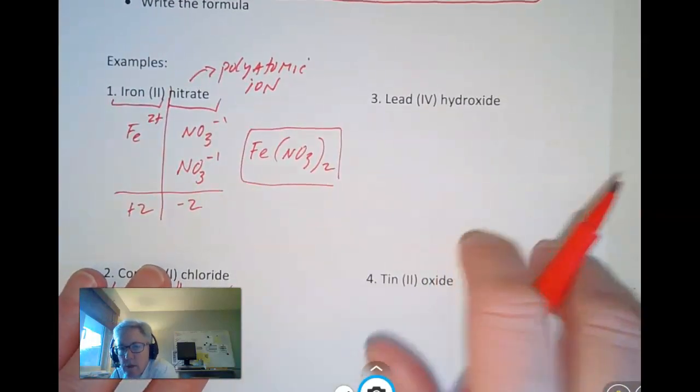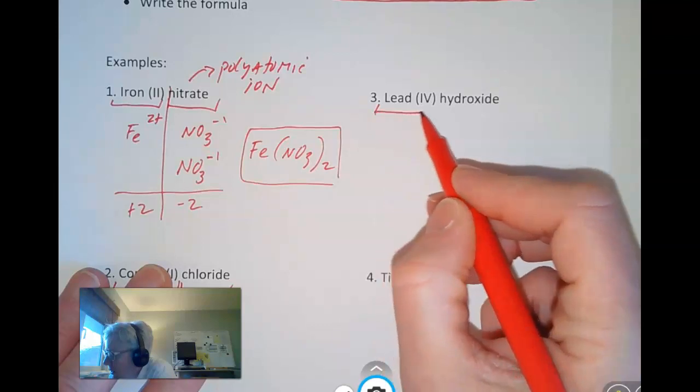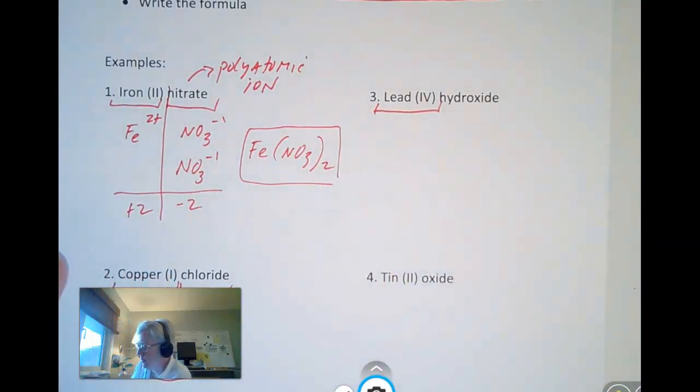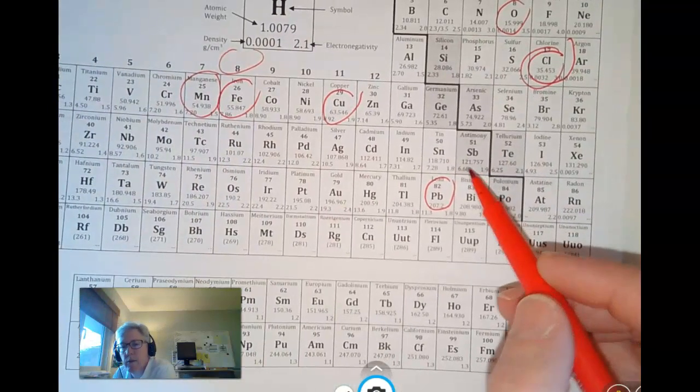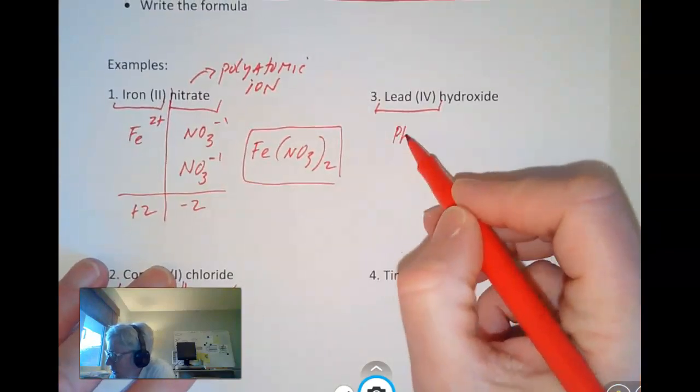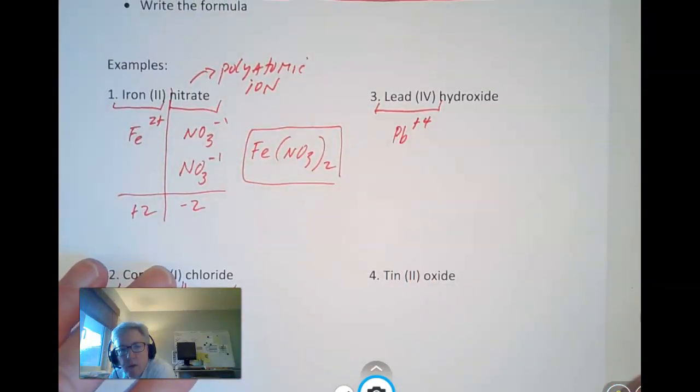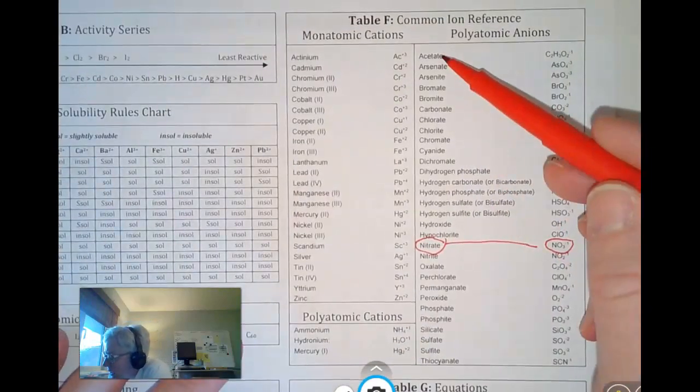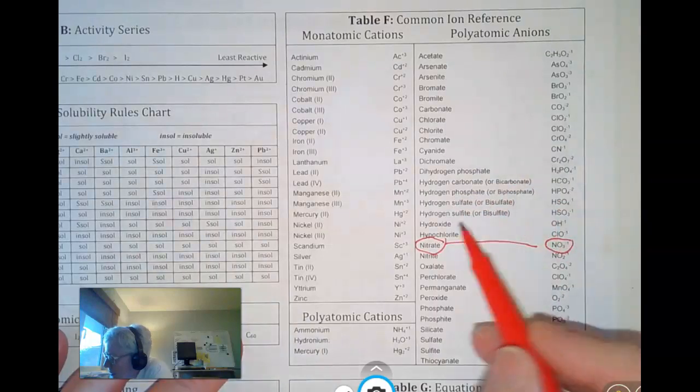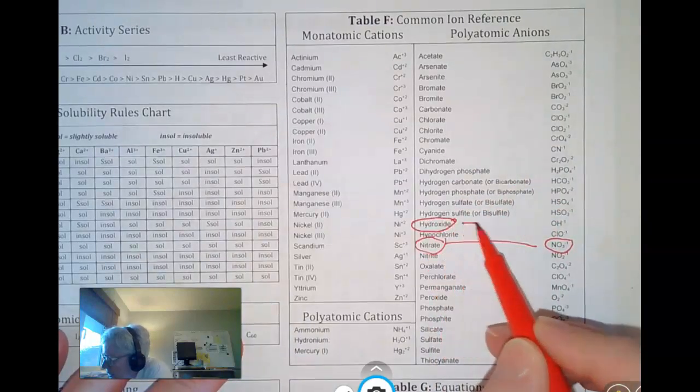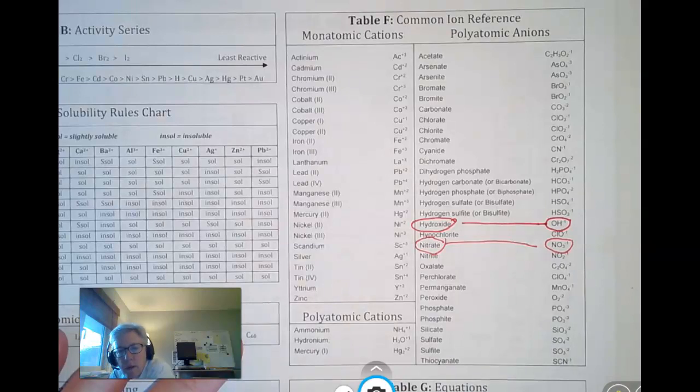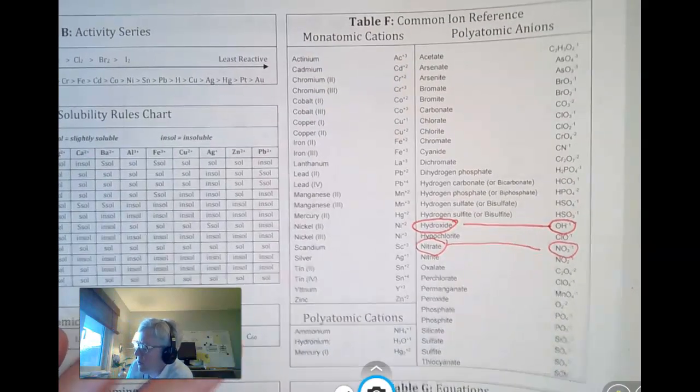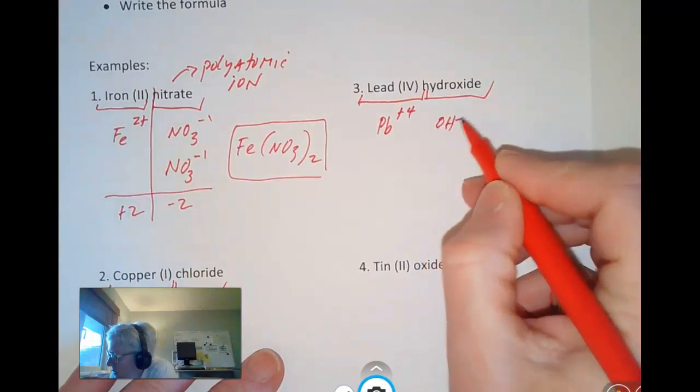Let's do the next two. Lead 4 hydroxide. Lead, Roman numeral 4. I think we did one with lead already. But here's lead right there. And this Roman numeral 4 means, by definition, that it has a plus 4 charge. Hydroxide is a polyatomic ion. So we've got to find it on the back. Scanning down here. Scanning, scanning, scanning. Here it is. Hydroxide. And its formula is OH with a minus 1 charge. So those are the elements with their charges.